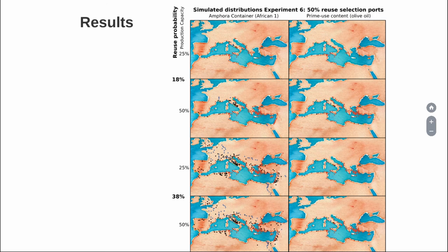Higher proportions of reuse are simulated for assemblages further away from the producing region, and higher proportions of reuse are simulated at terrestrial sites further removed from ports. What the model doesn't succeed at is representing the more limited presence of African 1 in the Eastern Mediterranean. For that I think future proof of concept models should have an element representing the structuring of state demand for goods — both for the capital of Rome and the large consumption centers, but also the troops along the Limes.